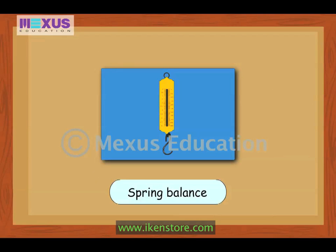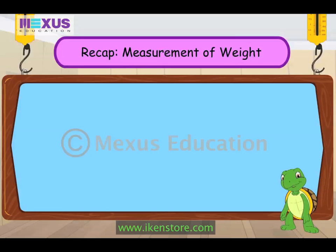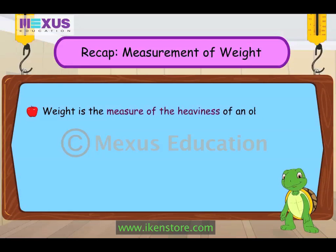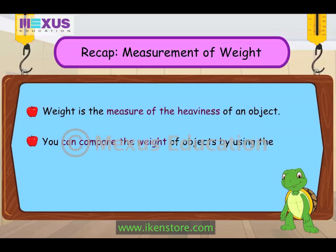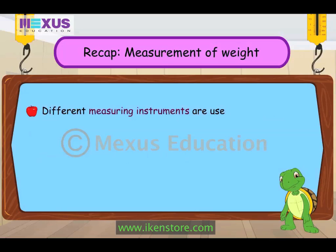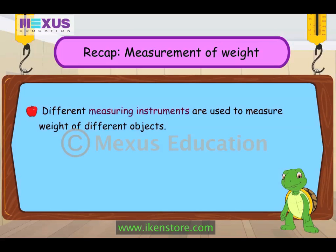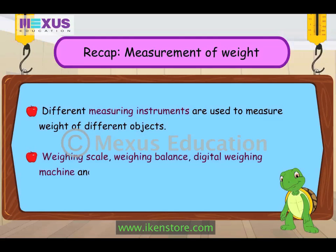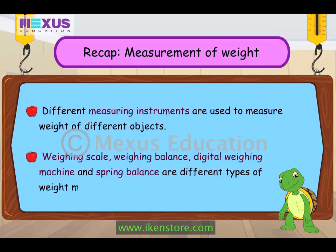And the last one is known as the spring balance. It is usually used to weigh traveling bags, crane sacks, gas cylinders, etc. Let's revise the important points. Weight is the measure of the heaviness of an object. You can compare the weight of objects by using the terms 'more than' and 'less than'. Different measuring instruments are used to measure weight of different objects. Weighing scale, weighing balance, digital weighing machine, and spring balance are different types of weight measuring instruments.